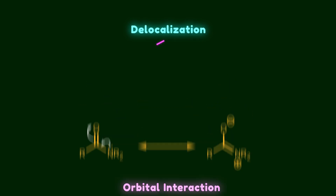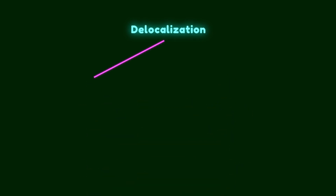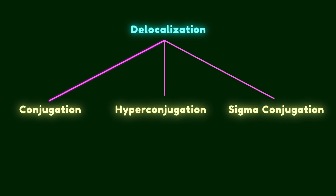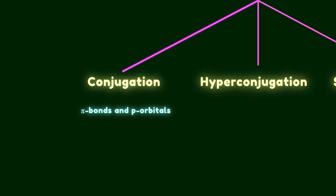Generally speaking, delocalization can be divided into conjugation, hyperconjugation, and sigma conjugation. Conjugation is the interaction between pi bonds and pi orbitals. For example, butadiene is a conjugated system.